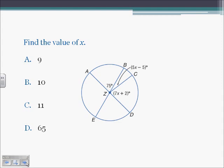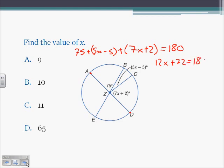This problem asks us to find the value of x again. We know AD is a diameter because both endpoints are on the circle and it goes through the center, so it splits the circle into two equal portions. Arc from A to C to D is a semicircle, so it adds up to 180. So 75 plus (5x minus 5) plus (7x plus 2) equals 180. Combining like terms: 12x plus 72 equals 180, so 12x equals 108, meaning x equals 9. That's choice A.